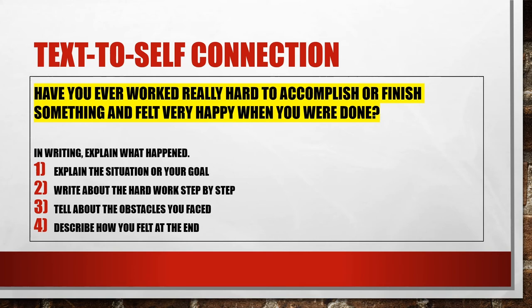We can see that this is something that happened in The Mouse at the Seashore, and also something that happened to Wilma Rudolph in Wilma Unlimited. Now we're making the connection from those two pieces of text to ourselves. In writing, you can explain what happened. In a first paragraph, explain the situation or your goal. Second, write about the hard work you did step by step — what were the steps you took to achieve your goal? Third, talk about the obstacles you faced — we know the mouse and Wilma Rudolph definitely had obstacles in their way. And lastly, describe how you felt at the very end when you accomplished that goal.